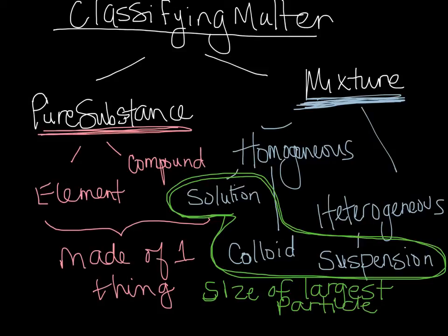So it turns out that a solution has the smallest size particles inside the mixture. A colloid has medium sized particles. And a suspension has the largest sized particles. Remember, suspensions settle out over time and it's just because their particles are so large. So size of particles, small, medium, large.